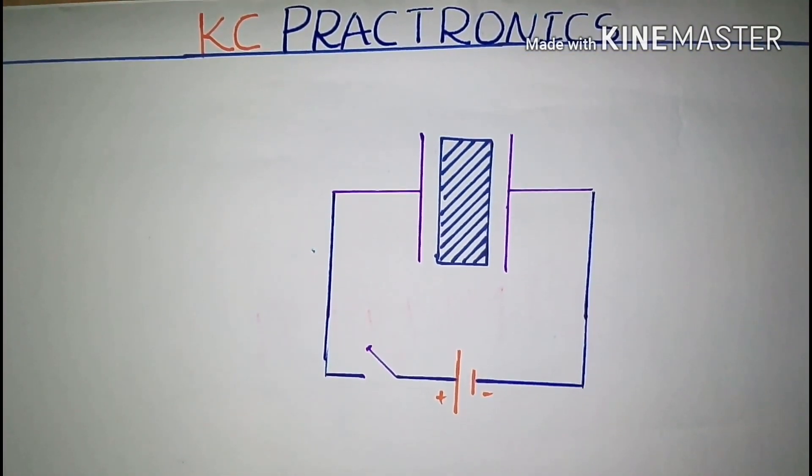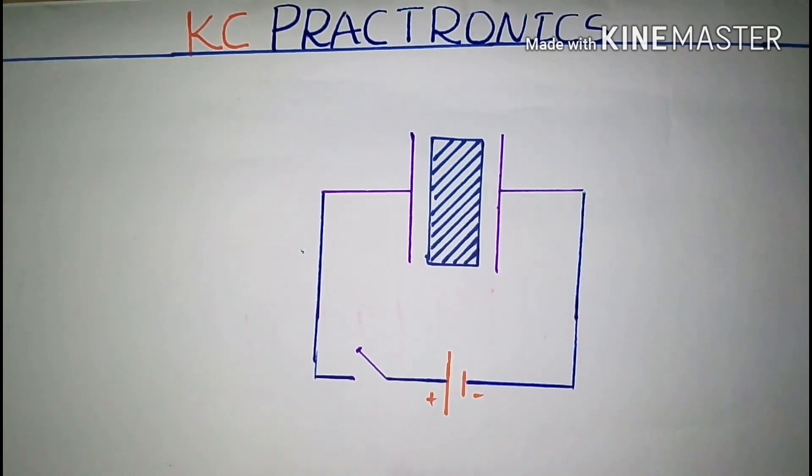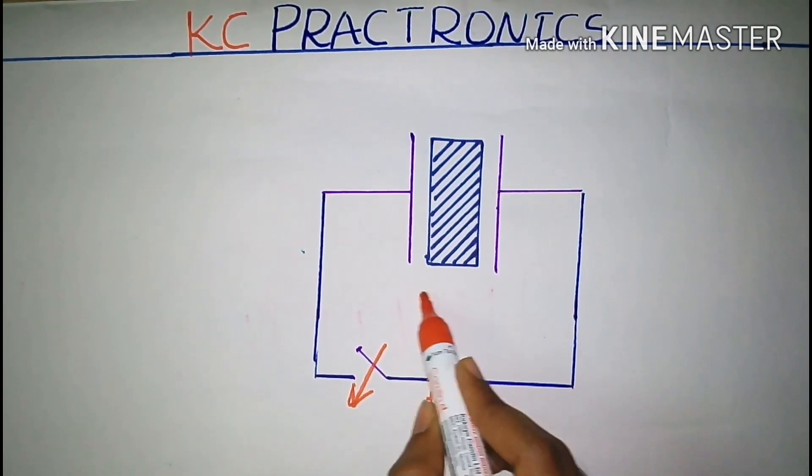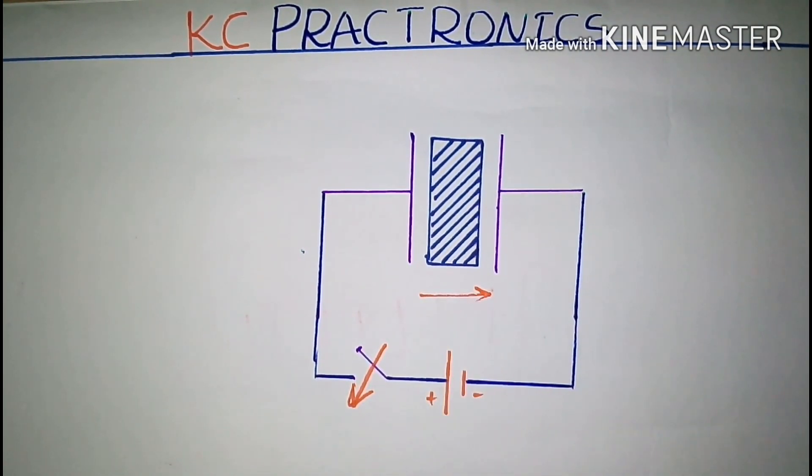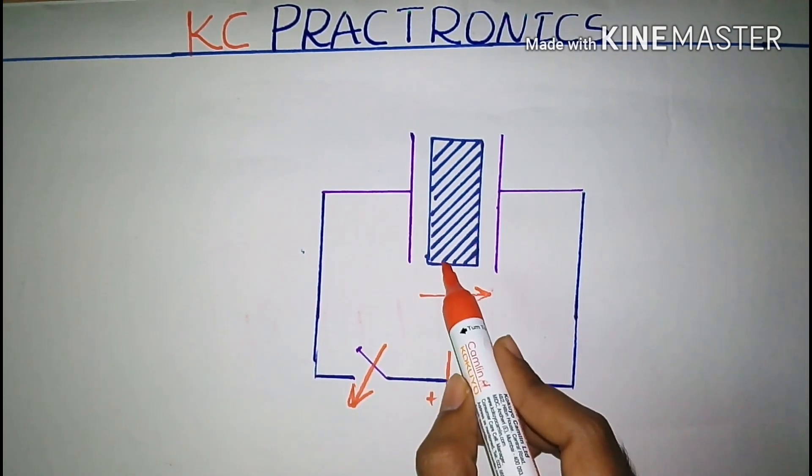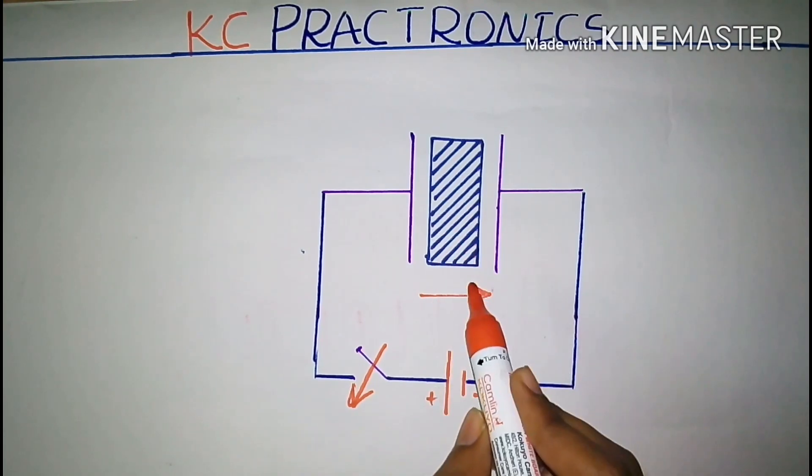Now, let us see what happens when a capacitor is connected to an external DC source. When we connect the voltage source to the capacitor, the electric current should move to the capacitor. But in between the capacitor plates, there is a dielectric which doesn't allow the current.